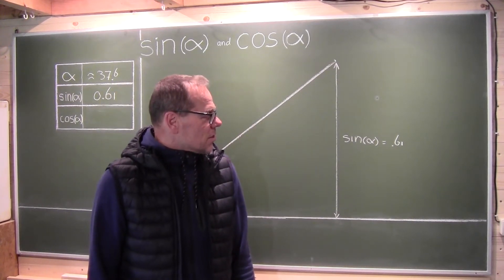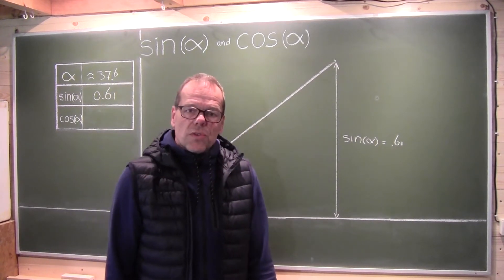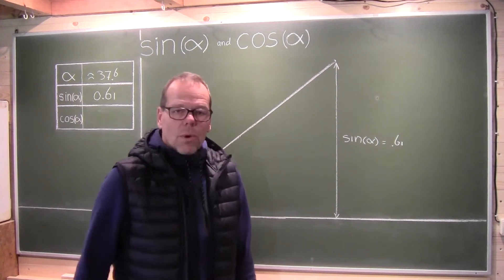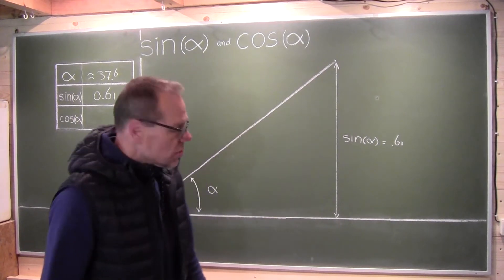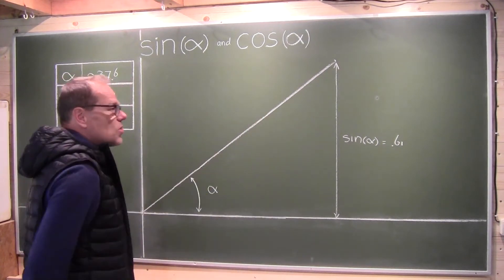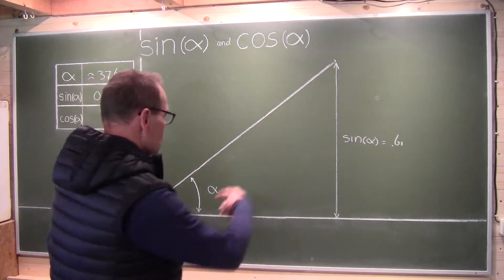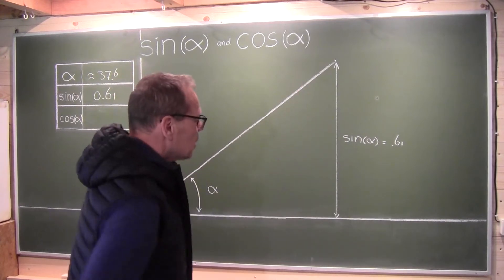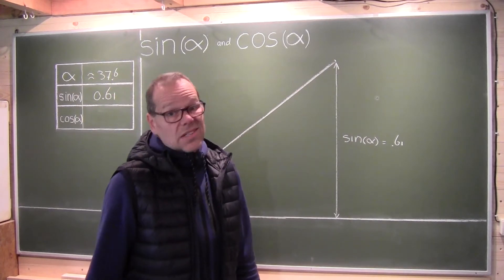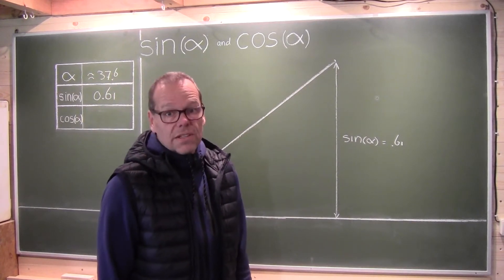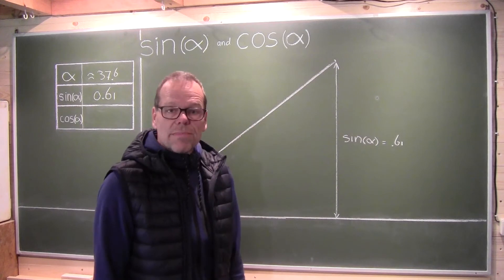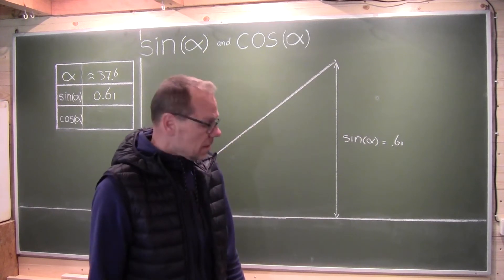Now, that's a pretty useless tool then — the sine — if you can only use it when this is one meter to get the sine. No, actually it isn't. It's a very useful tool because the relationship is simply very linear.